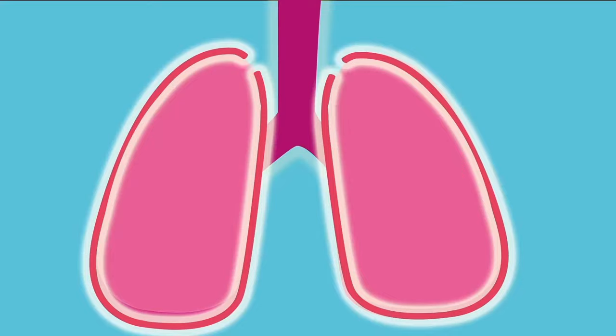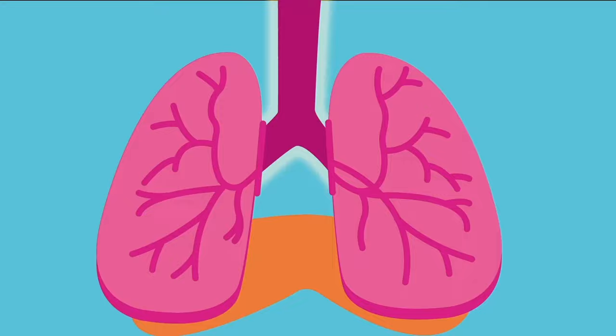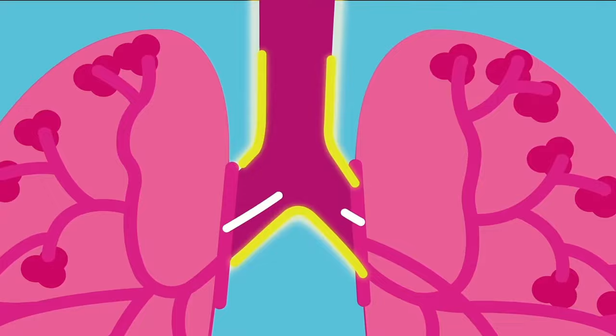Below the lungs, a set of muscles called diaphragm changes volume to assist breathing. Inside the lungs, the bronchus divides into smaller tubes called bronchioles. The bronchiole attaches to alveoli at each of its ends.